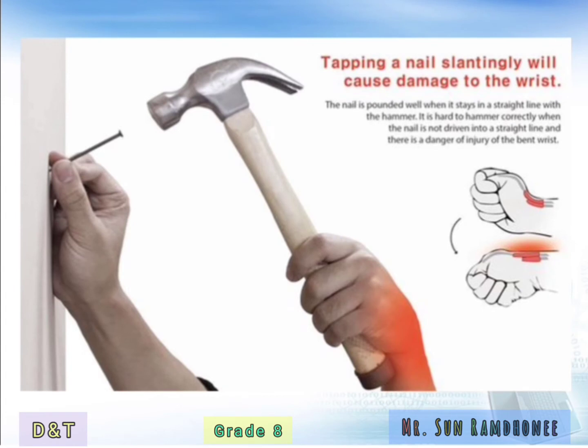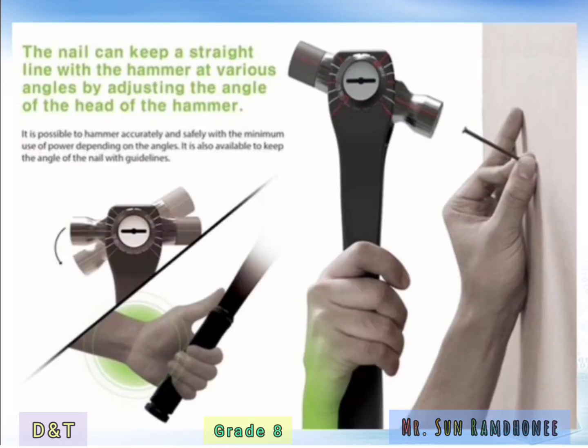We are going to look at another example of the application of ergonomics. As you can see from the screen, this is a claw hammer which is being used to nail. The position of the person's wrist is very inconvenient and can cause pain. To remedy this situation, we can design the hammer such that the hammer head can be rotated in the necessary direction so that the wrist remains in a natural position.